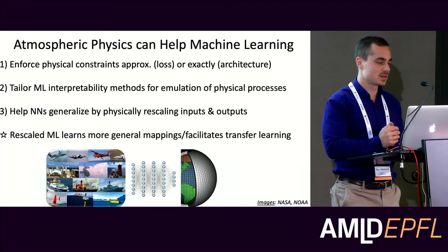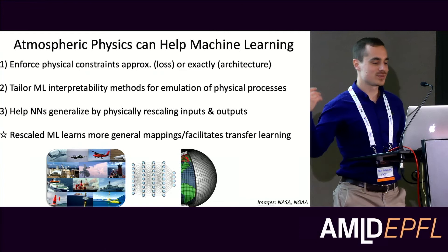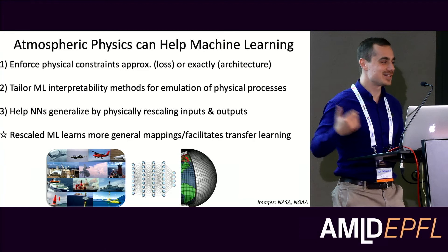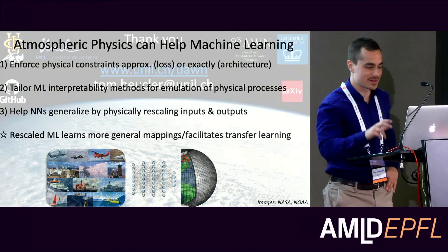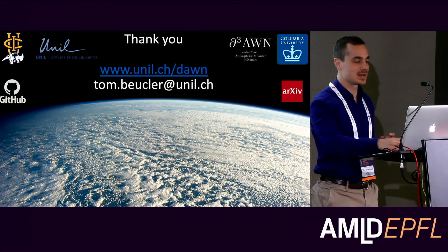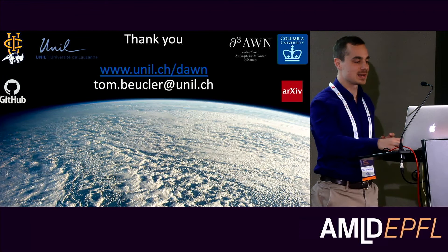The takeaway message — shared with the other talks today — is that all the knowledge accumulated over the past century and a half in atmospheric science can really help get the best of both worlds: the statistical world for accuracy, and the physical world for consistency and robustness. Feel free to check out my website for the details; everything is on the archive, so you can read it all without a paywall.